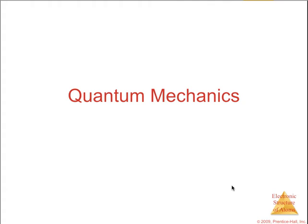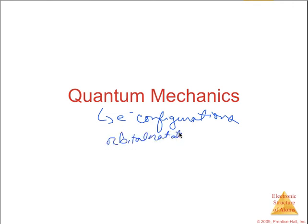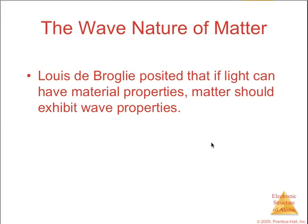We're going to talk about quantum mechanics and eventually how this relates to electron configurations and orbital notations. The idea here is to gain a better understanding of how the position of an electron is determined about an atom.